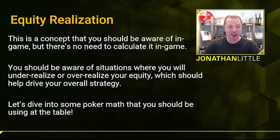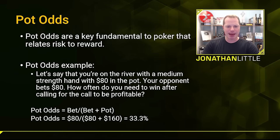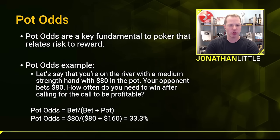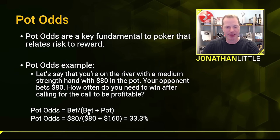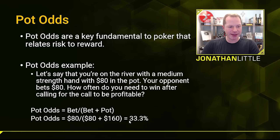Now let's dive into some poker math you actually do need to be able to do at the table. The first thing is calculating your pot odds. Pot odds are a key fundamental to poker that relates to risk and reward, because anytime you're facing a bet, there is risk and reward involved for both people. Say you're on the river with a medium-strength hand with $80 in the pot and your opponent bets $80. How often do you need to win after calling for the call to be profitable? Your pot odds are the bet you're facing divided by the bet you're facing plus the pot. In this scenario: $80 divided by ($80 plus $160) equals $80 divided by $240, which equals 33.3%.